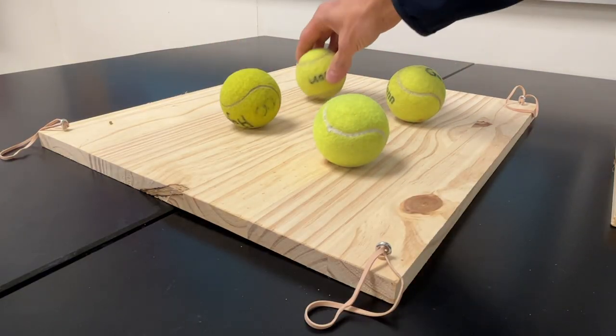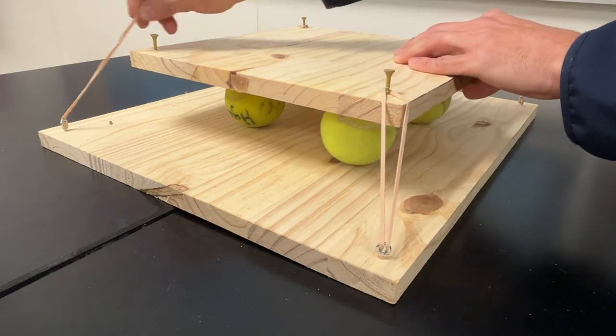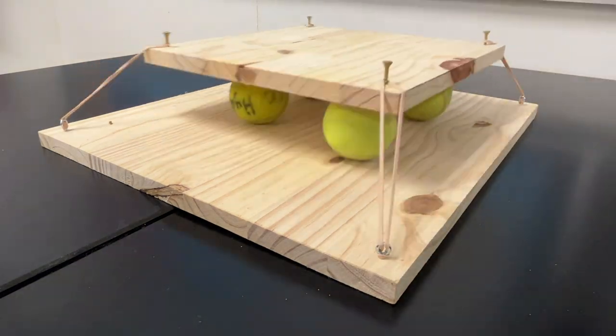Place four tennis balls on the larger board that you created earlier. The smaller one goes on top of the tennis balls and then just connect the rubber bands to the screws.